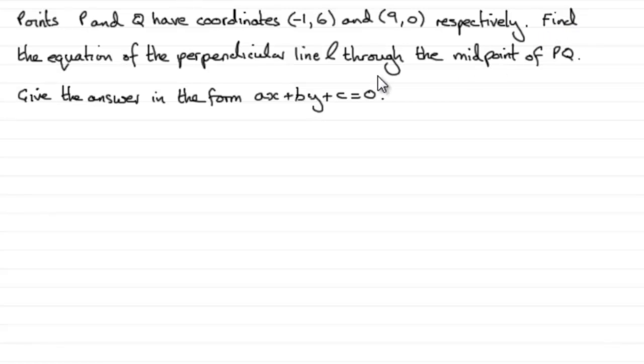And what we've got to do is find the equation of the perpendicular line, which is called L, through the midpoint of PQ. And we've got to give our answer in the form AX plus BY plus C equals 0, where A, B and C are integers, that is whole numbers.